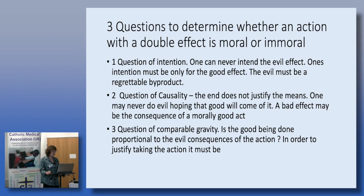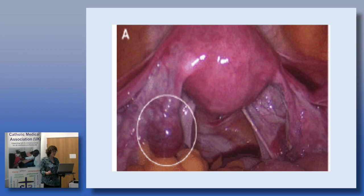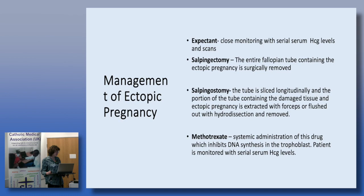First, ectopic pregnancy. This is a laparoscopy showing an ectopic pregnancy in the ampullary portion of the left tube, where most ectopics land. There are four ways to treat it: expectant management for stable patients where the HCG is less than 1,500 and falls by more than 50%, allowing tubal abortion to occur naturally; salpingectomy, removing the entire fallopian tube; salpingostomy, where the tube is sliced longitudinally and the pregnancy removed with forceps or hydrodissection; and methotrexate.